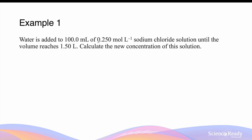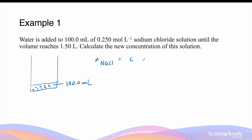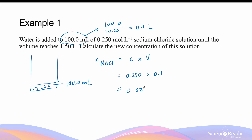Example 1: Water is added to 100 mL of a 0.25 mol/L sodium chloride solution until the volume reaches 1.5 liters. Calculate the new concentration of the solution. Initially I have 100 mL of the solution. The moles of sodium chloride is given by concentration times volume: 0.25 mol/L multiplied by 0.1 L (converting 100 mL by dividing by 1000), giving 0.025 moles.